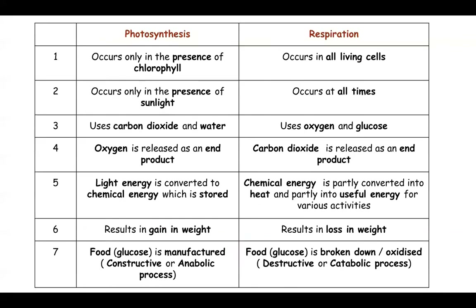Now we will differentiate between the catabolic and anabolic processes of photosynthesis and respiration. Photosynthesis occurs only in the presence of chlorophyll, whereas respiration occurs in all living cells whether or not they have chlorophyll. Photosynthesis occurs in the presence of sunlight; respiration occurs at all times and does not need sunlight. Photosynthesis uses carbon dioxide and water; respiration uses oxygen and glucose. Photosynthesis releases oxygen; respiration releases carbon dioxide. In photosynthesis, light energy is converted to chemical energy and stored, whereas in respiration, chemical energy is partly converted into heat and partly into useful energy — that is, ATP — for various activities.